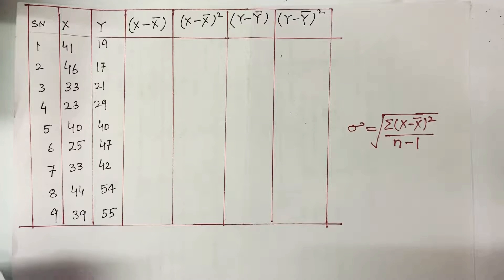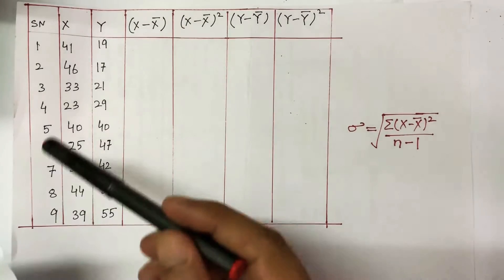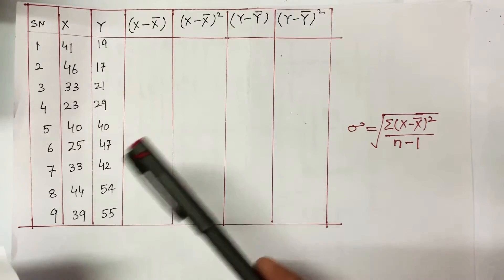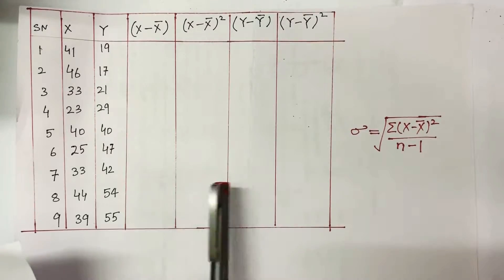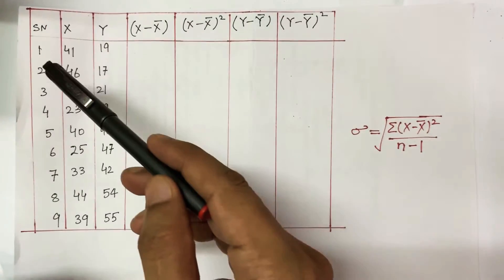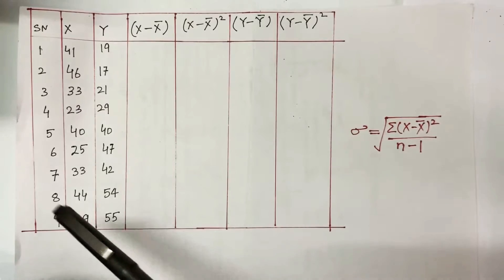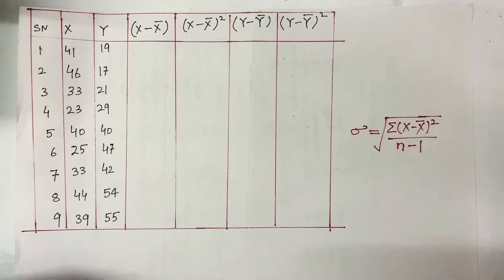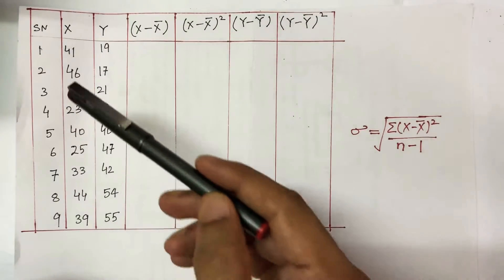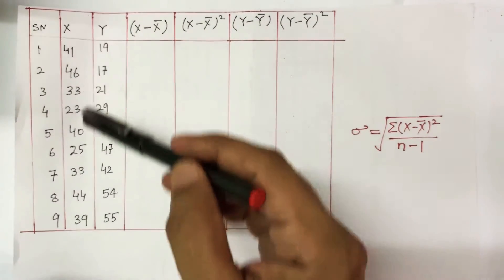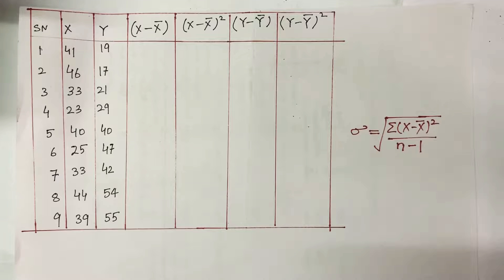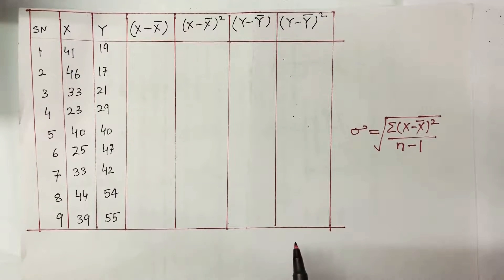You can think about this problem in this way: these are the marks of two different groups of students. The same test has been given to two different classes. Group X has nine students and Group Y has nine students. They have been given a test out of sixty and these are the marks obtained by all students of Group X and Group Y.